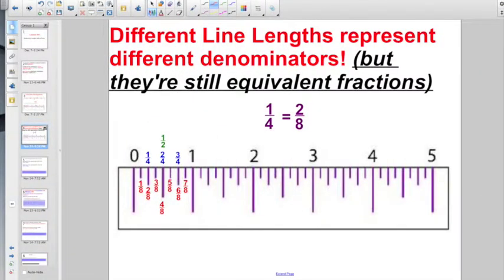But, a little bit more about those unit segments. Different line lengths represent different denominators. But, they're still equivalent fractions. One fourth is exactly the same as two eighths. And, later on, we're going to need to know this, so I might as well get you started right now. That, if you multiply your numerator and your denominator by some same number, you are always going to end up with an equivalent fraction. One times two is two. Four times two is eight. That's how we know they're equivalent.